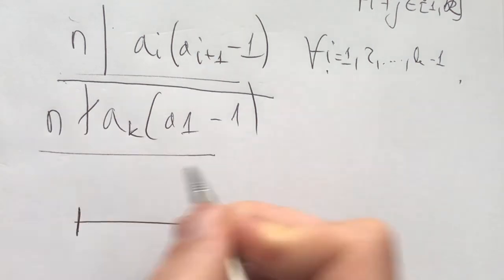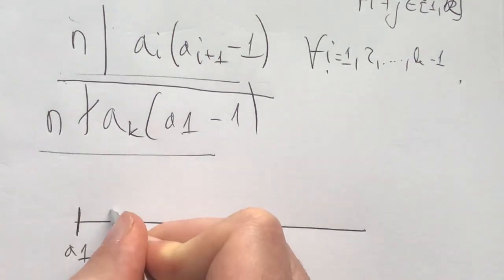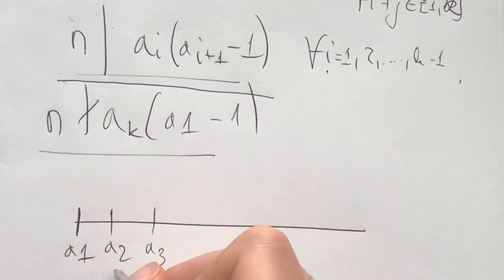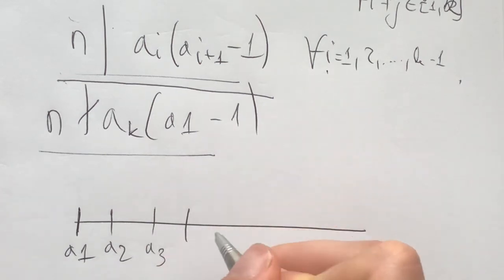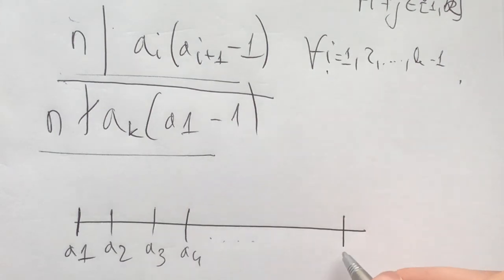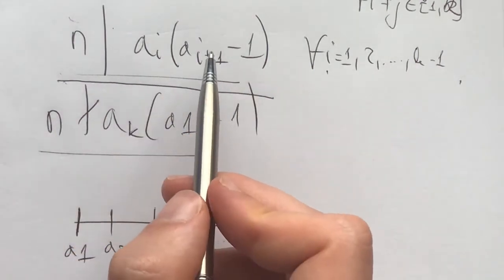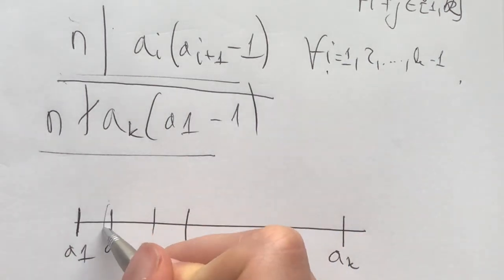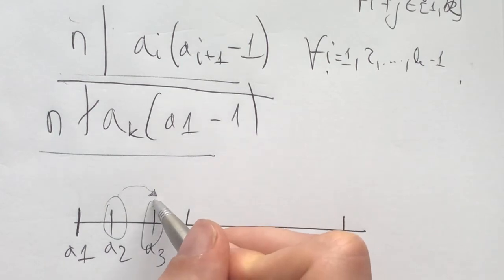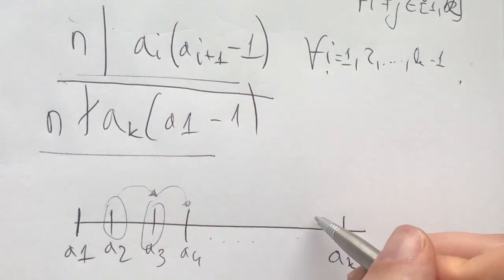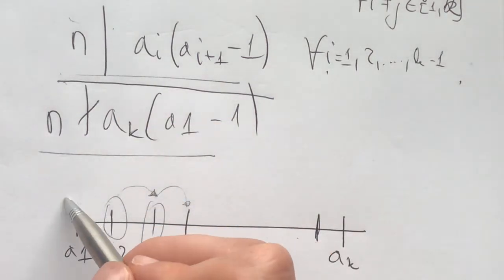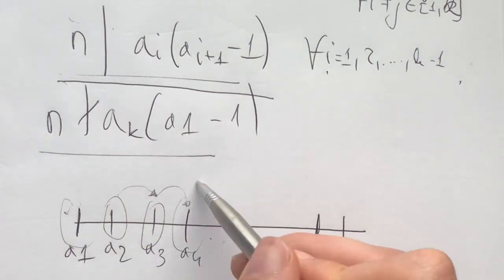The idea here is quite simply that if this condition holds true, you can think of it as putting these numbers on a line. This does not mean a1 < a2 < a3 — just put them on a line. This can be like 10, 5, 11, some combination of numbers that satisfy this condition all the way till ak. What the problem condition states is that n divides each number times its neighbor to the right minus 1 — so it divides a3 times its neighbor to the right minus 1, for each number which has a neighbor to the right.